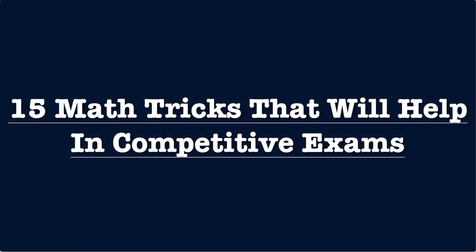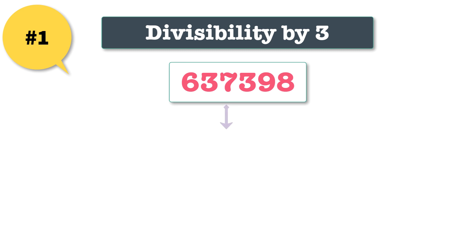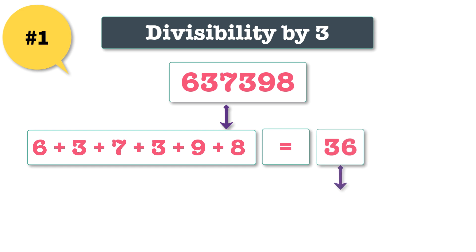Number one: divisibility by three. To see if a number is divisible by three, add up the digits. If the sum is divisible by three, so is the number. Let us consider an example. To see if this number is divisible by three, add all the numbers and check if it is divisible by three. Since the sum of numbers is divisible by three, so is the number.